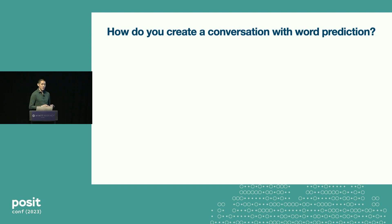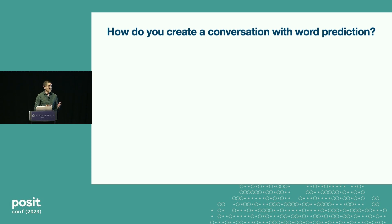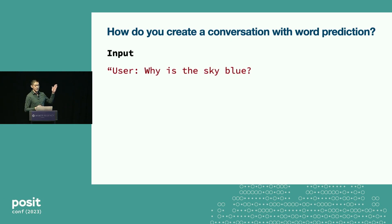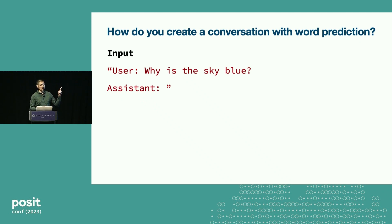I showed you text prediction and we're all familiar with ChatGPT. One question you might have is, how do you create a conversation with word prediction? If I'm just predicting the next word in the string, how does it work when there's a back and forth between two people? It's actually pretty simple. There's the input, and it looks something like this: a string with "user colon, why is the sky blue?" and then "assistant colon," and then the string closes.